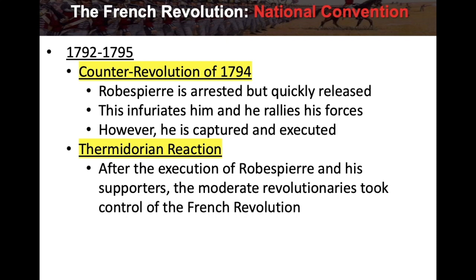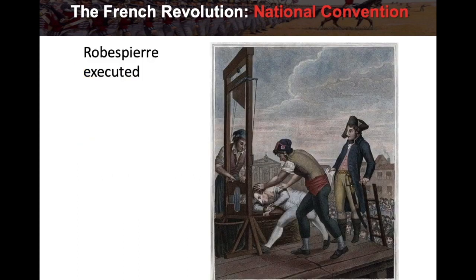This leads to the Thermidorian reaction. After the execution of Robespierre and his supporters, the moderate revolutionaries take control of the French Revolution. Robespierre had been radical, and the reaction — based on the counter-revolution — is that more level-headed moderates take control to try to calm things down. Here's a picture of Robespierre being executed.